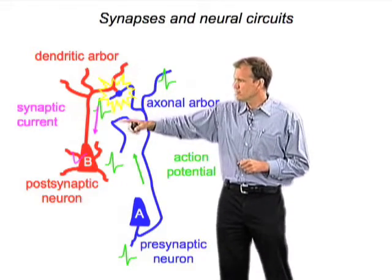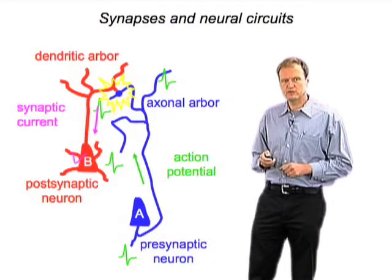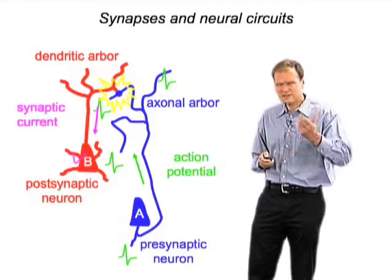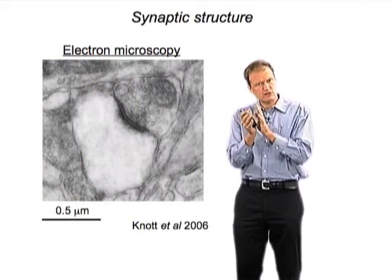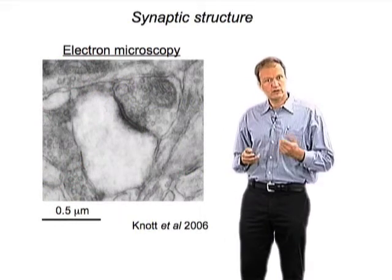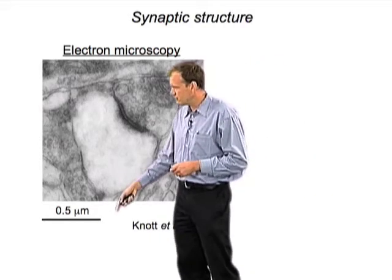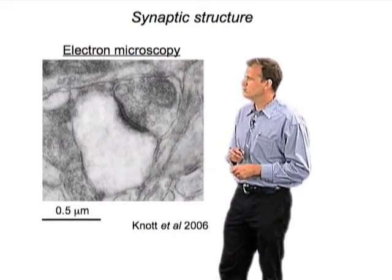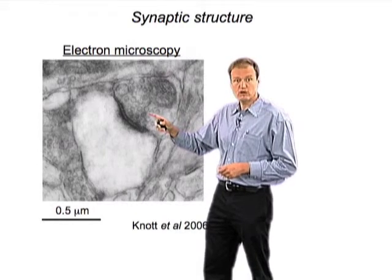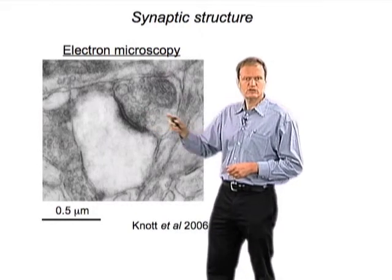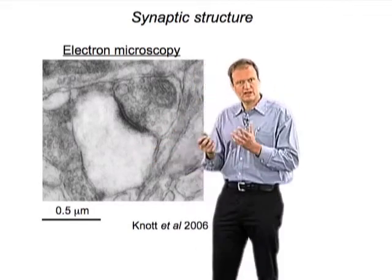Individual synapses have a very weak impact onto the postsynaptic neuron. Here's an electron micrograph — an electron microscopy image of a thin section of cortical tissue, a cross-section through a synapse. Notice the tiny length scale: the entire image is only about 2 micrometers or so in diameter. You can see the presynaptic terminal, full of vesicles filled with excitatory neurotransmitter glutamate, opposed to a dendritic spine — the postsynaptic specialization.